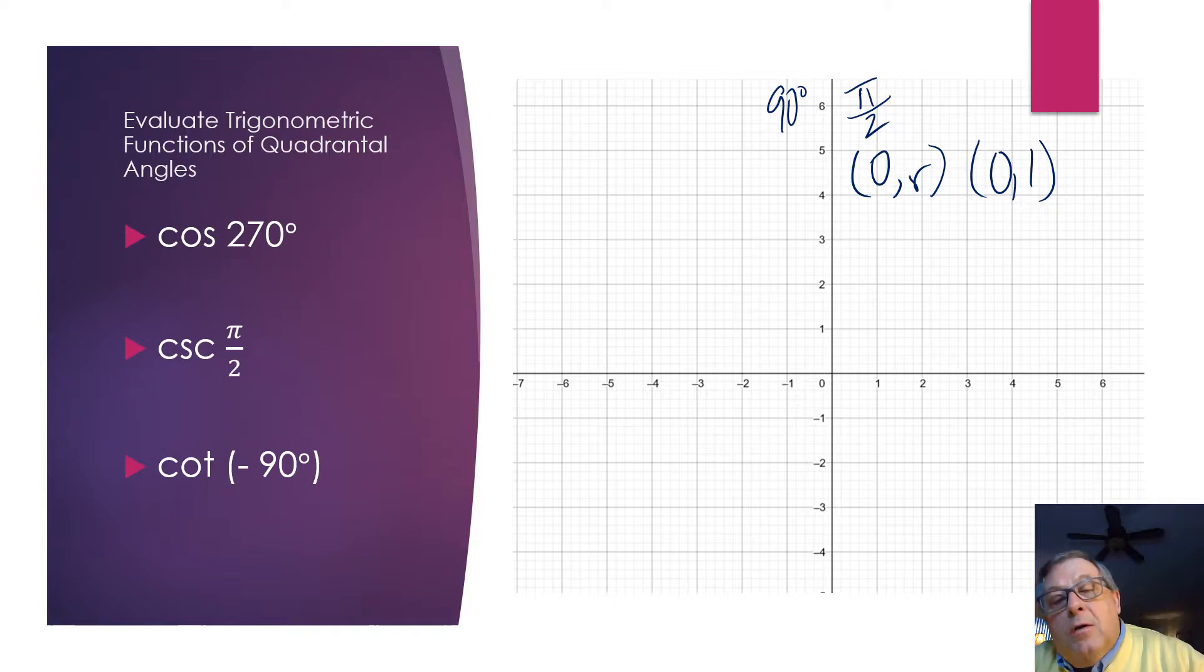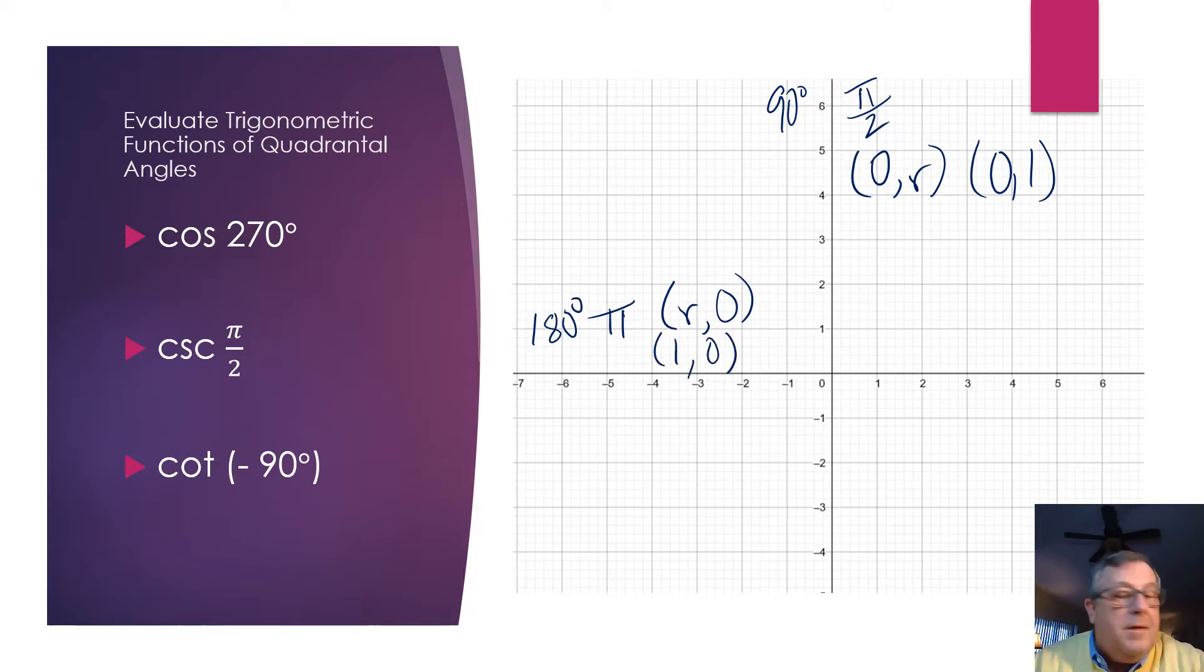Now, suppose our terminal side of our quadrantal angle lies on the negative side of the x-axis. Well, at this point, we know that we're either at 180 degrees, or we're just at pi, halfway around the circle. And let's think about what we have here. Well, this would be, our x-coordinate would be r until we define it, but at y, we're at 0. Now, if we define r as 1, being a unit circle, then our cosine here is 1, and our sine is 0.